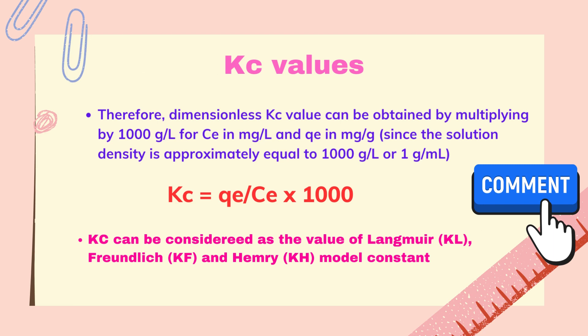However, if your concentration is in mole per liter, then you need to multiply 55.5 to this equation: Kc = KL divided by Ce, multiplied by 1000. This is the correct form for the KL values if your unit of concentration is milligram per liter and KL is milligram per gram. Based on previous reports, Kc can be considered as the value of the Langmuir constant, Freundlich constant, and Henry isotherm model constant.